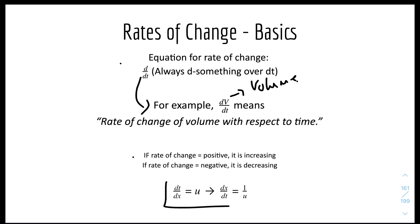One nice thing to note is that if dt over dx equals u, you can reciprocal both sides to get dx over dt equals 1 over u.